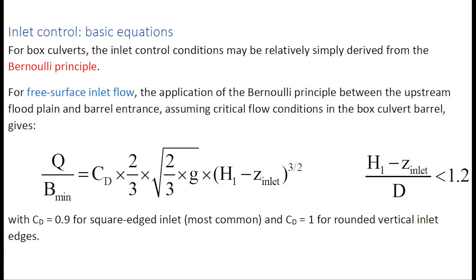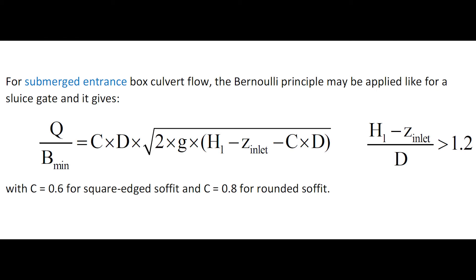For a box culvert, the inlet control condition may be relatively simply derived from the Bernoulli principle. For free surface inlet flow, the application of the Bernoulli principle between the upstream floodplain and barrel entrance, assuming critical flow condition in the box culvert barrel, gives a relationship between the unit discharge and the upstream total head. For a submerged entrance, the Bernoulli principle may be applied like for a sluice gate, linking the unit discharge to the upstream total head.